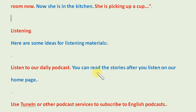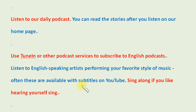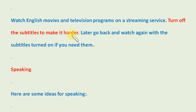Here are some ideas for listening materials. Listen to our daily podcast — you can read the stories after you listen on our homepage. Use TuneIn or other podcast services to subscribe to English podcasts. Listen to English-speaking artists performing your favorite style of music. Often these are available with subtitles on YouTube. Sing along if you like hearing yourself sing. Watch English movies and television programs on a streaming service. Turn off the subtitles to make it harder, then go back and watch again with the subtitles turned on if you need them.